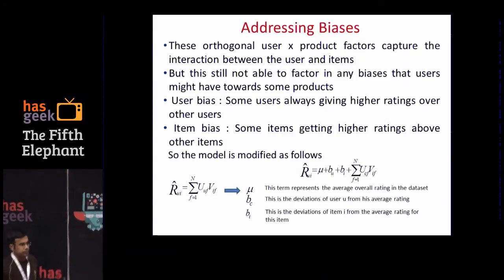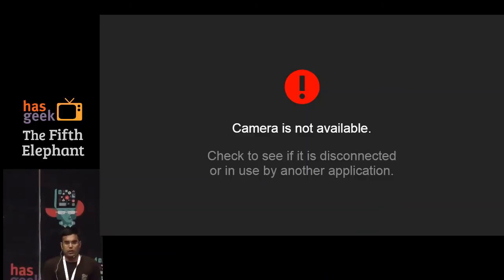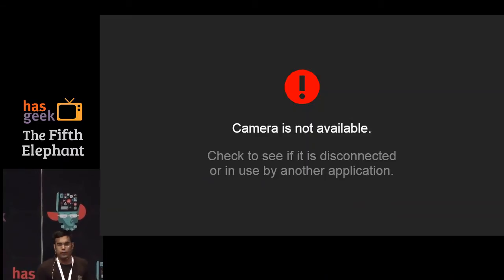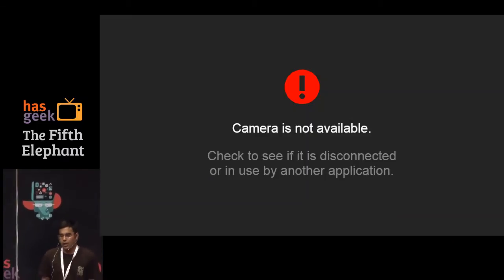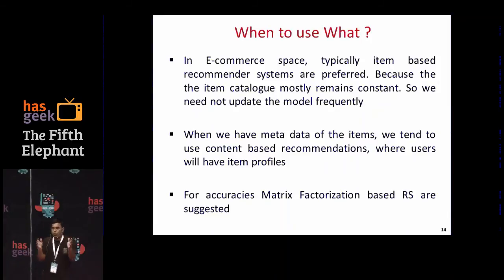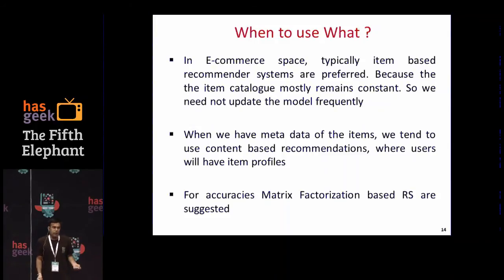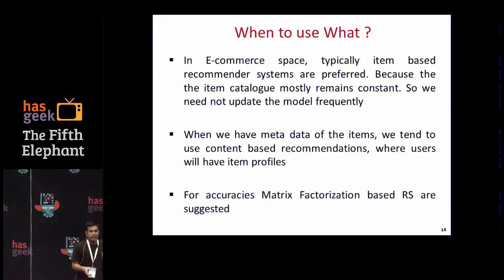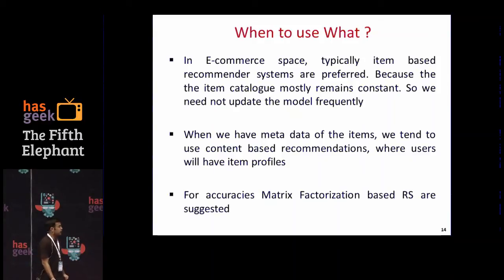Now that we've talked about the types of recommender systems, when would you want to use which? If your item catalog is really huge, you might not want to go for matrix factorization because the computations are very high — as soon as a new item enters the matrix, you'd need to redo the entire matrix computation, which takes significant time. In the real world with millions of users and items, it's better to stick to collaborative filtering. When you have metadata for items — which is rare in the real world — definitely use content-based recommendation systems. And if accuracy is the key metric, go for matrix factorization.